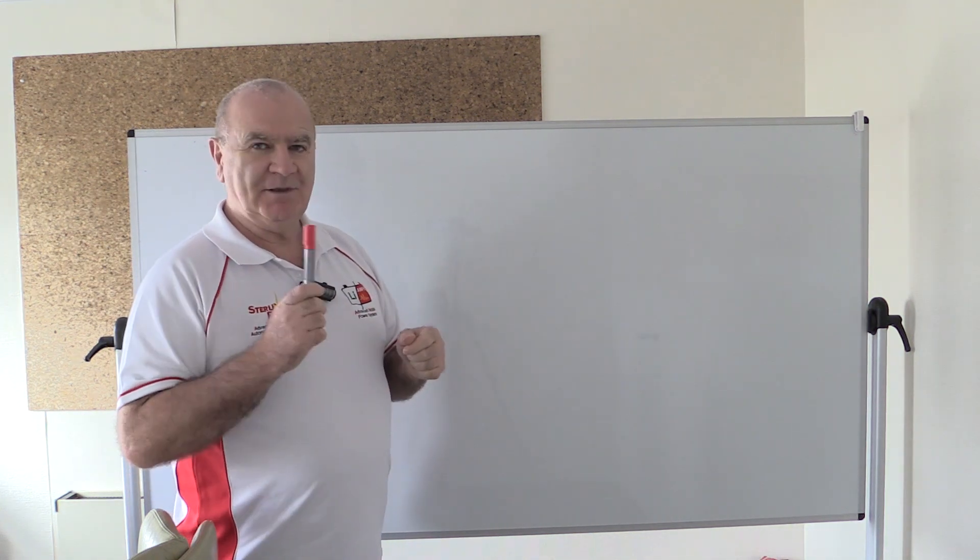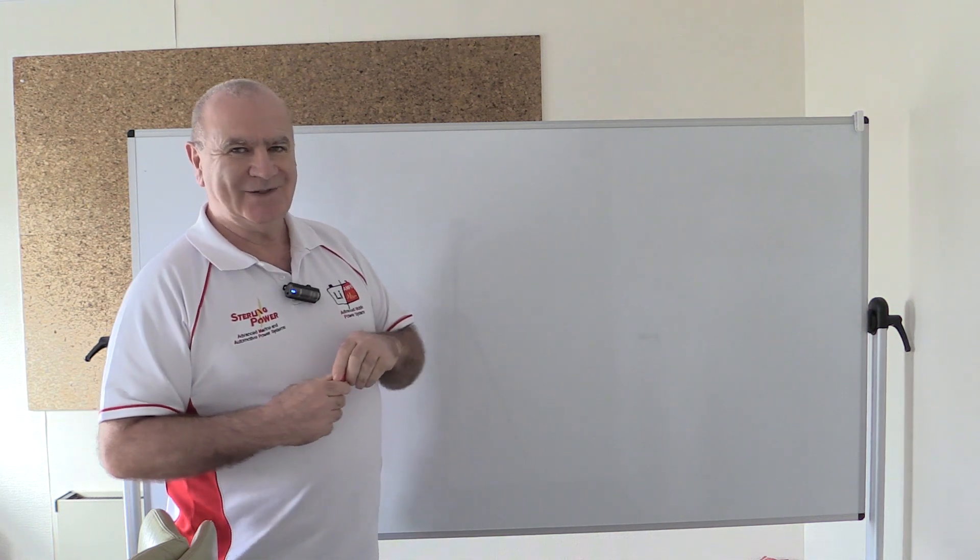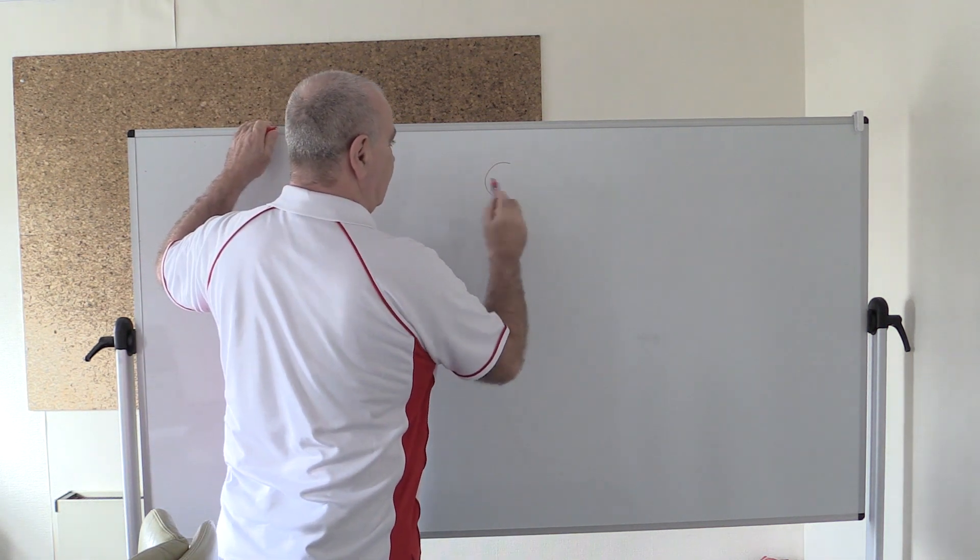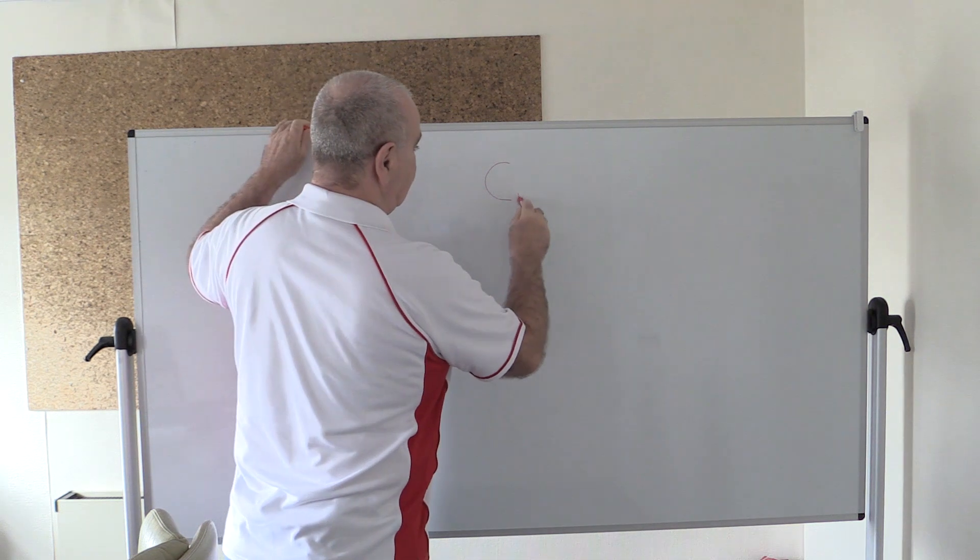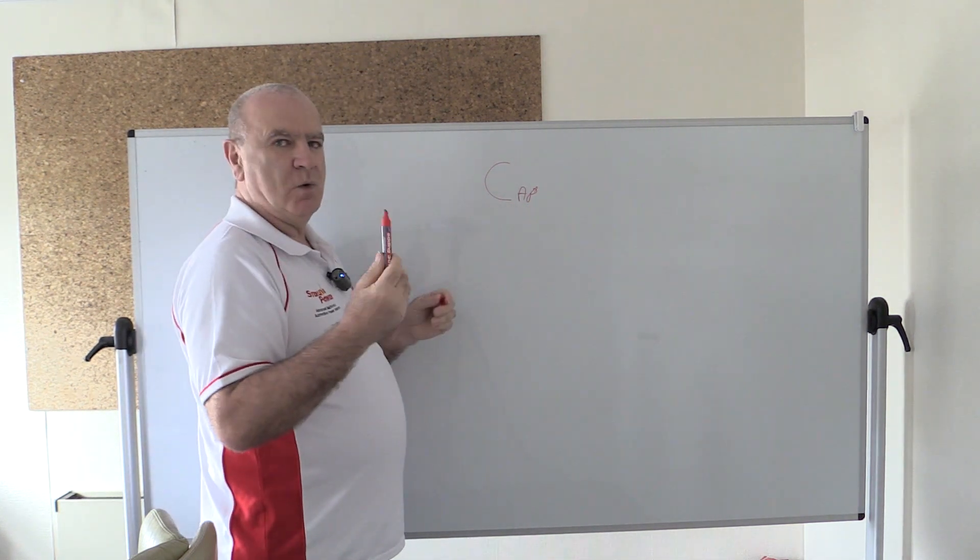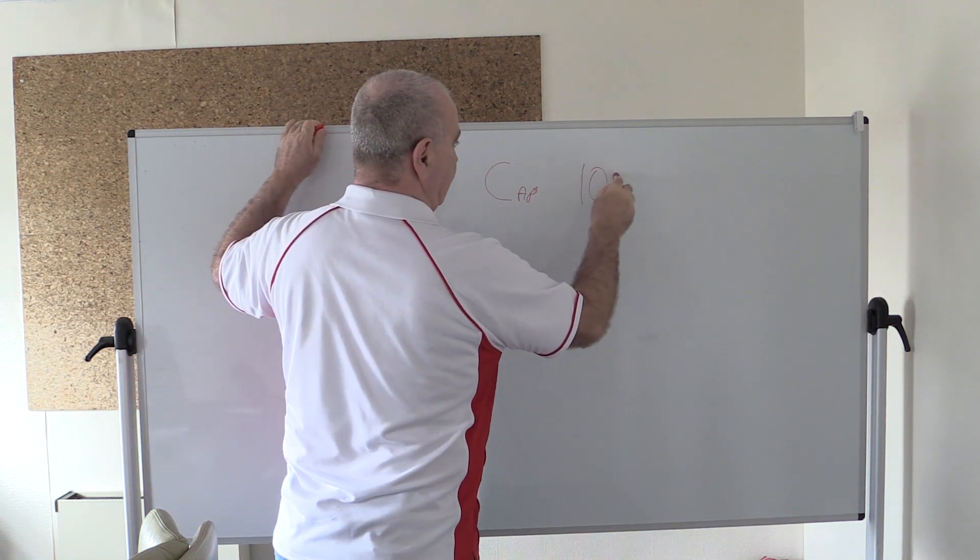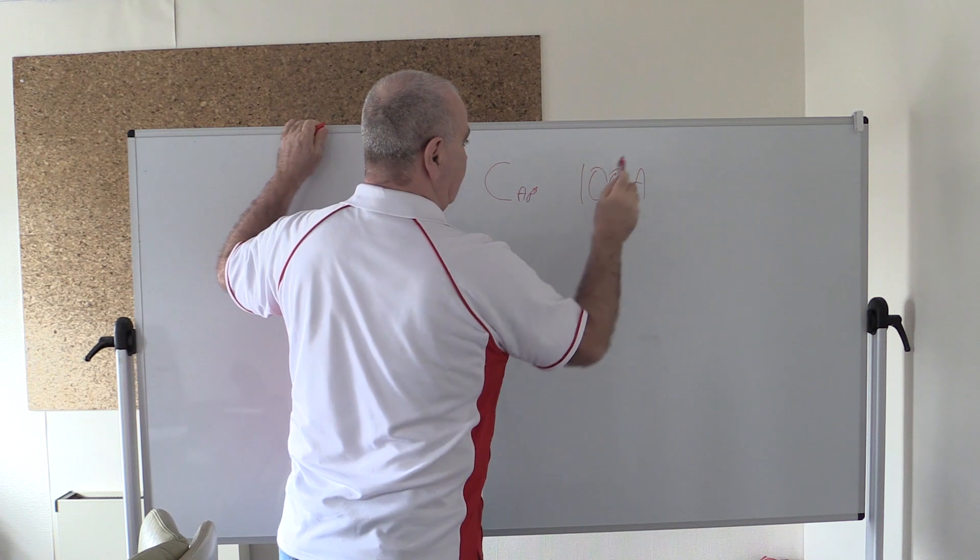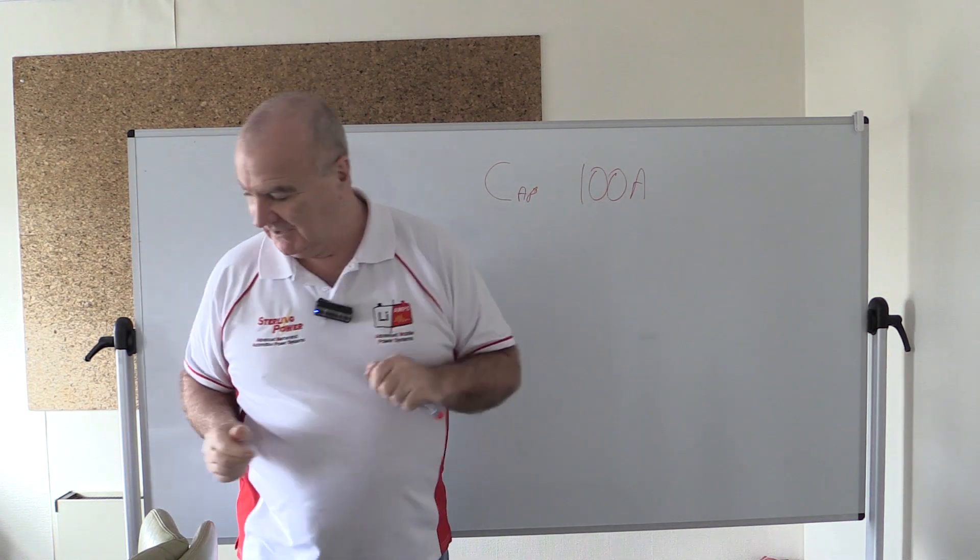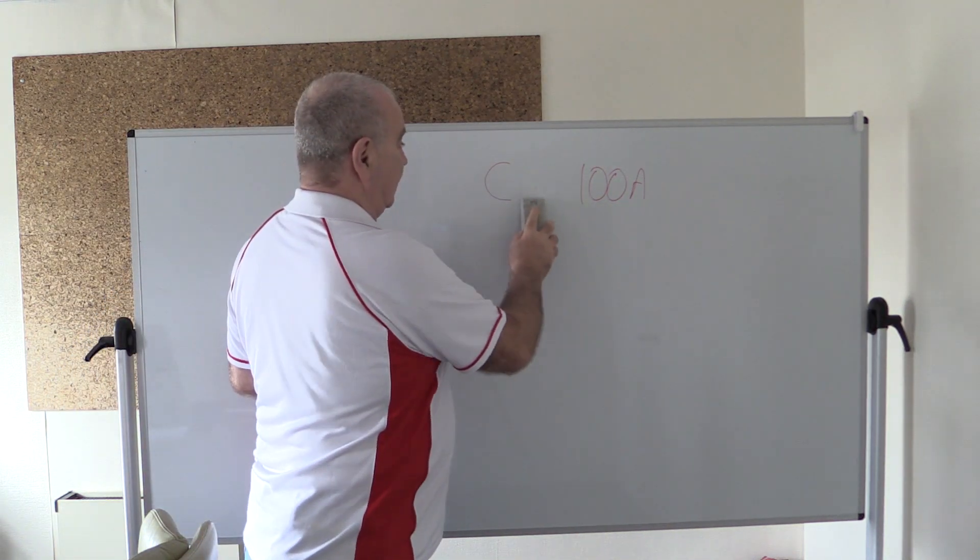So the thing to be looking for on a battery, the first thing, is the thing called the C rating. So looking for a C rating. Now C stands for capacity. Now say for example you wanted a 100 amp battery. So say we had 100 amps, is this the battery you're interested in? Now if the C rating for that battery, there's two C ratings, one is for the charge rate and one is for the discharge rate.